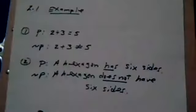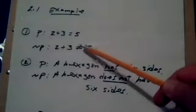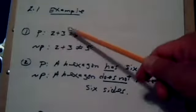Here's an example. If p is 2+3=5, then the negation of p would be 2+3≠5. Notice we're negating what p is. If p is 'a hexagon has six sides,' the negation of p would be 'a hexagon does not have six sides.'